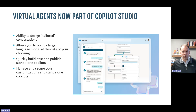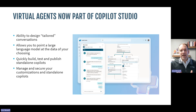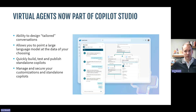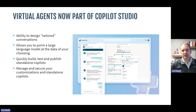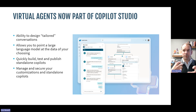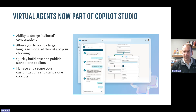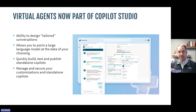Next is Copilot Studio. Power Virtual Agents has been part of the Power Platform and allows you to create a bot for your website or customer service portal. Copilot Studio now allows you to take that experience further — you can use the GPT-4 model from the internet as well as point it at a data source of your choice, enabling much better tailored conversations. In the past, you had to manually give the bot the questions and answers you wanted it to handle.